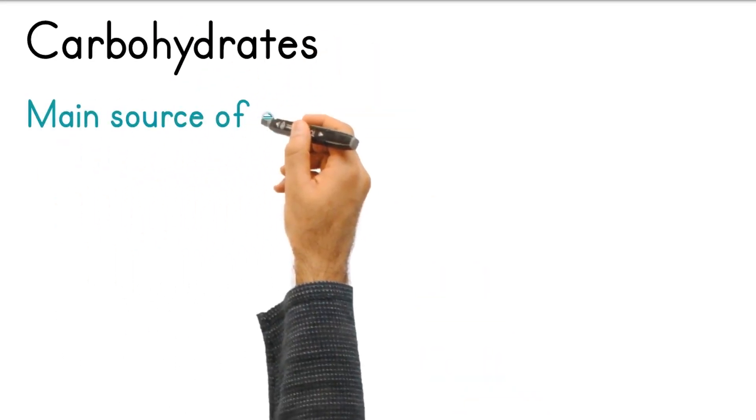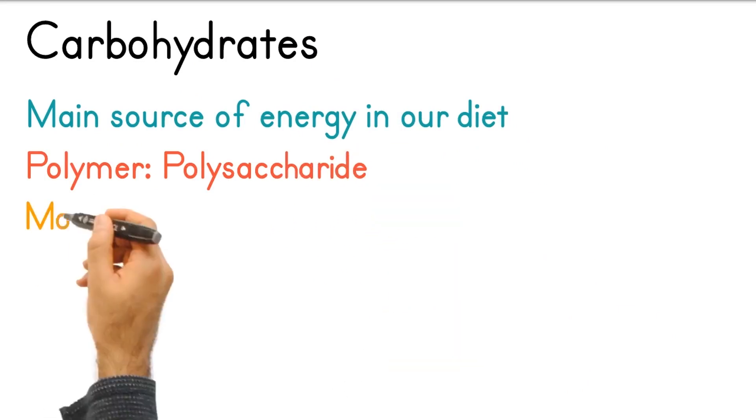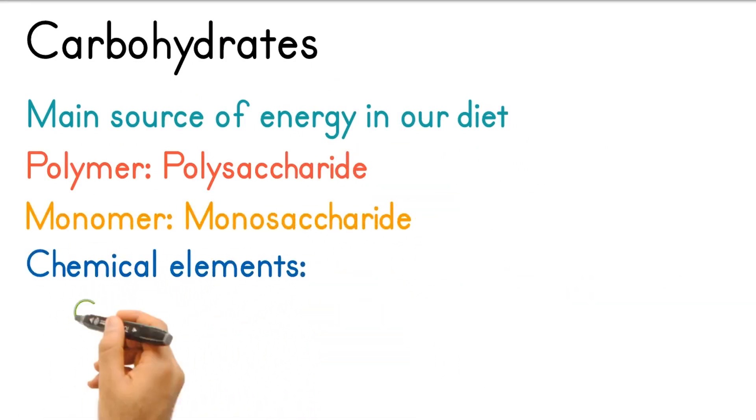Carbohydrates. The main source of energy in our diet. A polymer is called a polysaccharide. The monomers are called monosaccharides. Consists of the chemical elements carbon, hydrogen and oxygen.